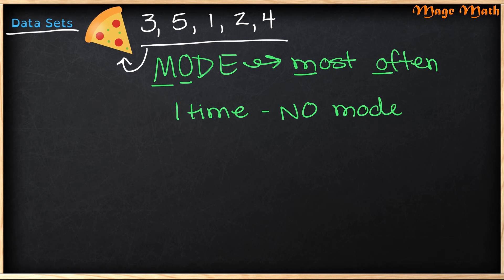But what if we use the example from before, where another friend showed up and they also wanted one slice of pizza? So now I have three, five, one, two, four, and one. What number shows up the most often, or the number that is repeated the most? That would be one. One shows up two times. So in this case, our mode equals one.